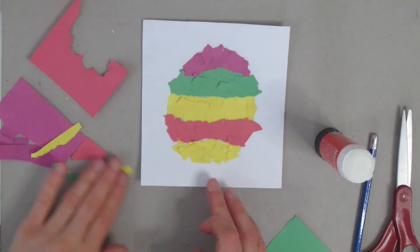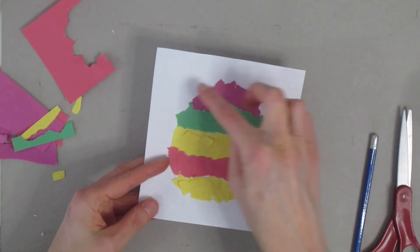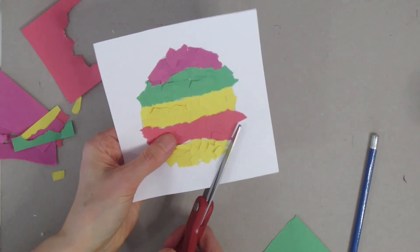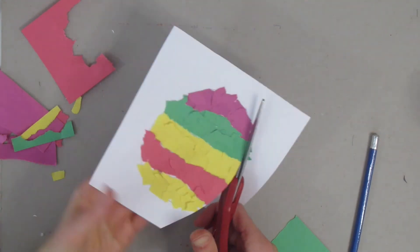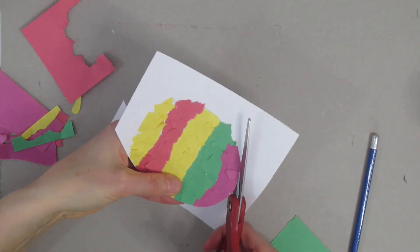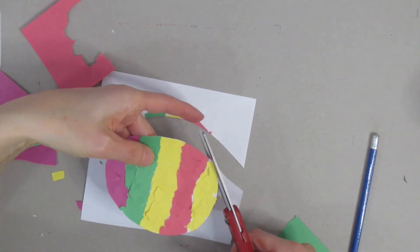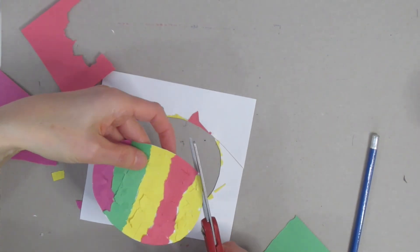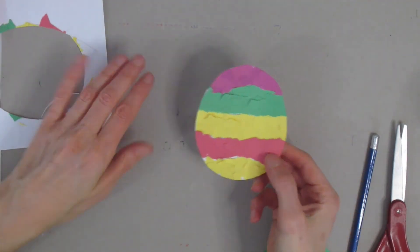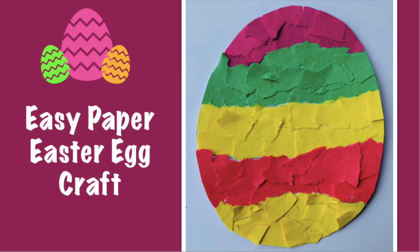Then grab your scissors and we're just going to trim around the outside. Around that oval shape, that egg shape we created, you're just going to trim. You can see all the little pieces that are sticking out - I'm just trimming those off so it's nice and perfectly shaped like an egg. And there we go! Thanks for joining me on Craft Club for Kids to make this easy paper Easter egg craft. Remember, be creative and have fun.